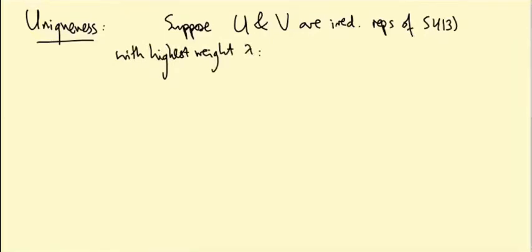And this is with respect to some choice of line of irrational slope, that's kind of fixed. I want to prove that U is isomorphic to V. So there's a unique irreducible representation with this highest weight up to isomorphism. And that will be as much of the classification theorem as I'm going to prove at the moment.